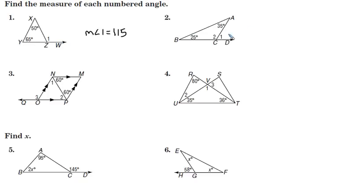For number 2, the same thing applies here. Remote exterior angles, 35 and 25, add up to 60, and that will be our measure of our exterior angle. And then by linear angles, linear pair of angles being supplementary, I know the measure of angle 2 would be 120.